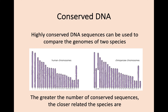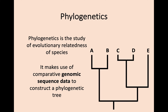Conversely, if you barely share any DNA sequences at all, then you're very distantly genetically related. This idea of evolutionary relatedness is what we're going to be focusing on for the next part of this key area. In order to compare how closely related different species are, we use genomic sequence data and compare it to create something called a phylogenetic tree, as you can see here.